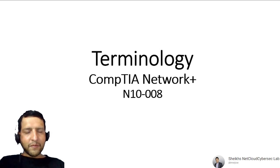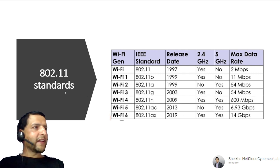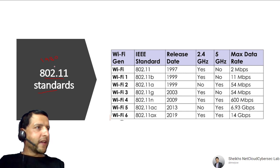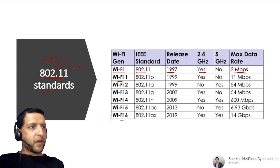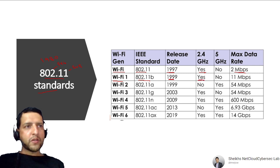The first term is the 802.11 standard. Starting with Wi-Fi 1: 802.11 started in 1997, works at 2.4 GHz with a speed of 2 Mbps. 802.11b was released in 1999, also at 2.4 GHz with a speed of 11 Mbps. Wi-Fi 2, which is 802.11a, started in 1999 and works at 5 GHz with a speed of 54 Mbps.